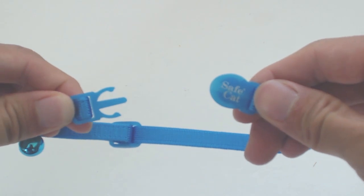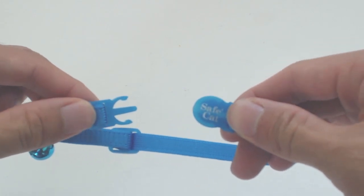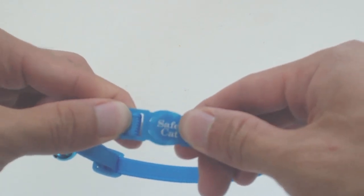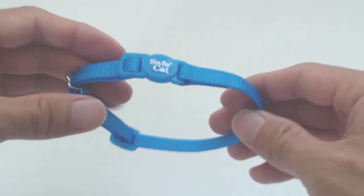The clasp on the collar simply pulls apart when enough force is applied. This is a safety feature in case your cat's collar gets caught, so your feline friend can free themselves and not get hurt.